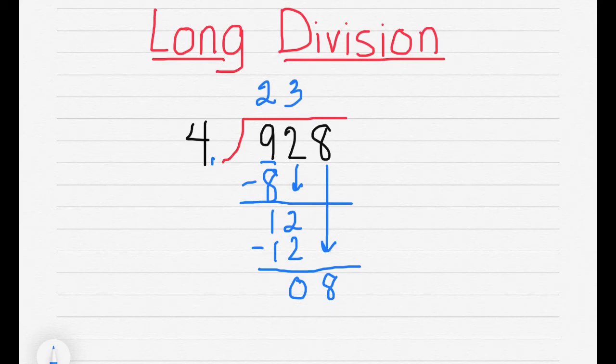4 goes into 8 two times. And 4 times 2 equals 8, which is 0. I have no more digits to bring down. So my quotient or my result is 232.